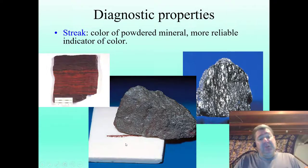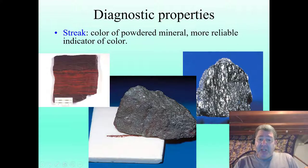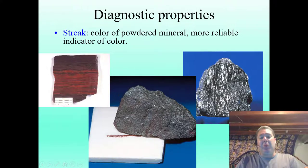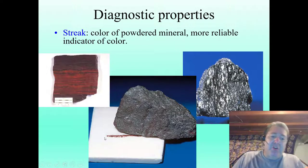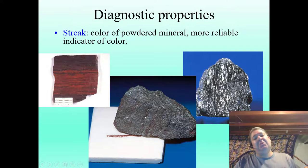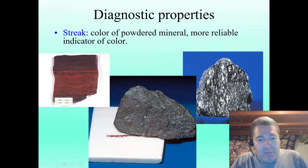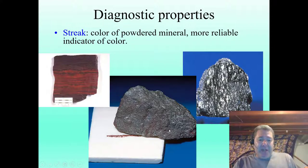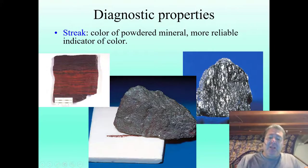Certain minerals have very diagnostic streaks. This mineral here is called hematite — heme, hemoglobin, blood — it has a blood red streak, that's where it gets its name. Even though it has a silvery metallic look to it, when you streak it on the streak plate it leaves a reddish brown streak, which is very indicative of hematite.